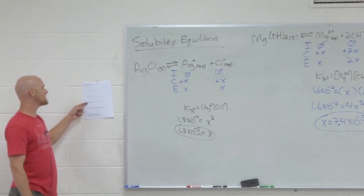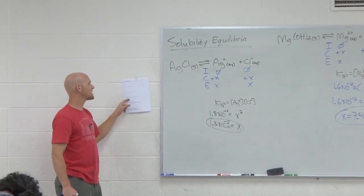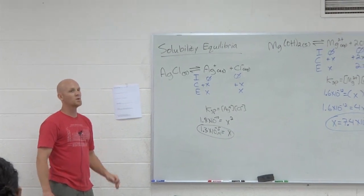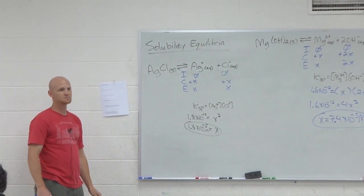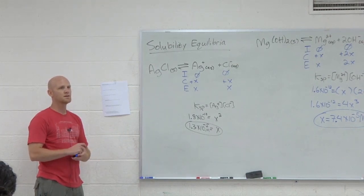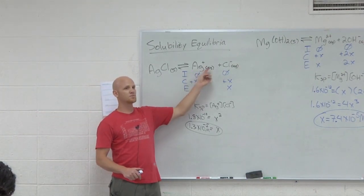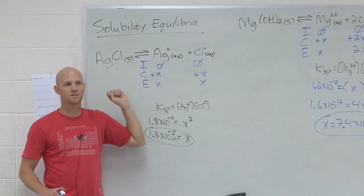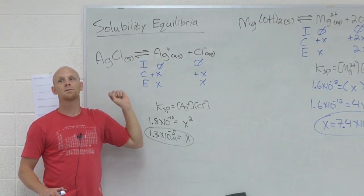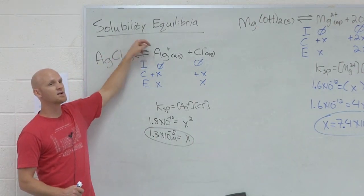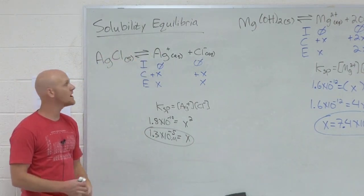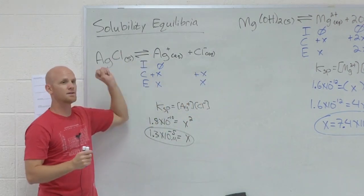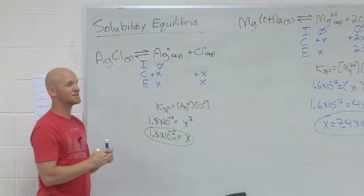If I added either one of these ions into my solution, it would shift it left, meaning the solid is less soluble now. So instead of looking at solubility in water, part D says, what is the molar solubility of AgCl in 0.1 molar HCl? What do you know about HCl? Strong acid dissociates all the way. Which of these does it actually have in its solution? Chloride, how much? Point one.